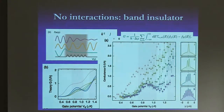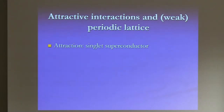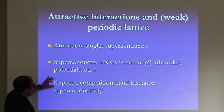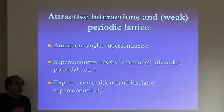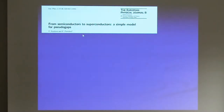The question is: what happens with attractive interactions and a weak periodic lattice? If I have attraction, I would imagine a singlet superconductor — superconductors resist scattering, so one might expect they don't care about a small periodic potential. You would thus expect a competition between a band insulator (zero interaction) and a superconductor (large interaction). This is confirmed by a nice paper by Nozières and Pistolesi, who looked at a mean-field model with both a periodic potential and BCS attraction: when you increase the BCS gap, the band gap drops to zero, transitioning from band insulator to superconductor.